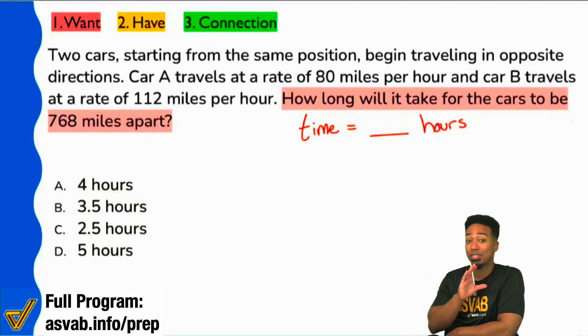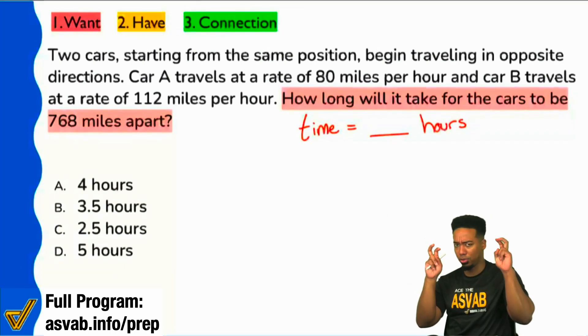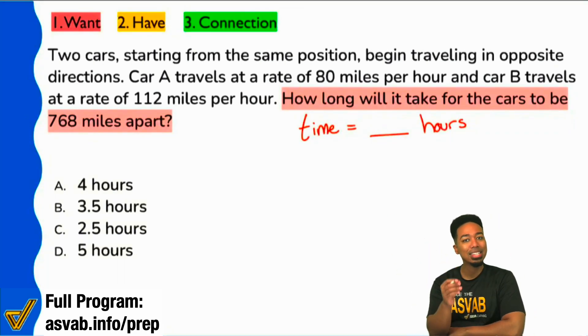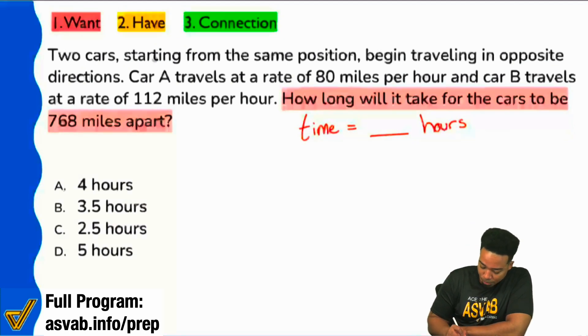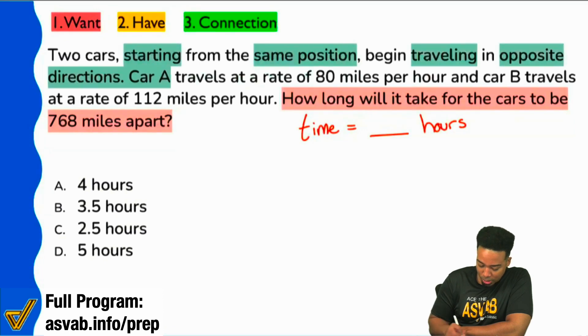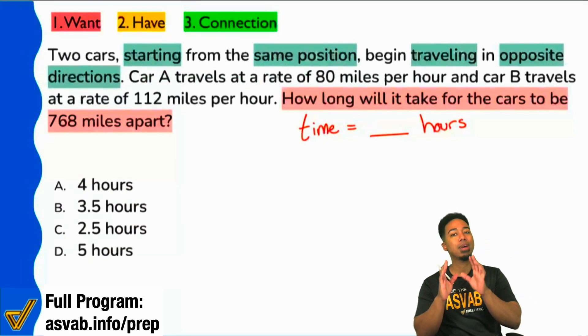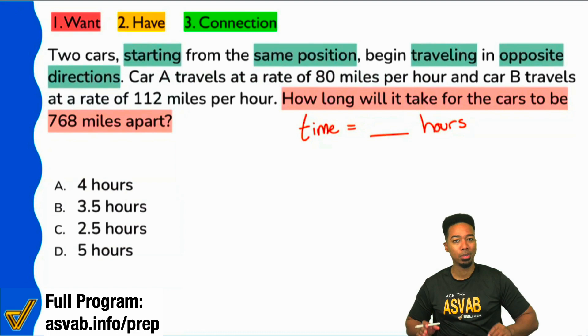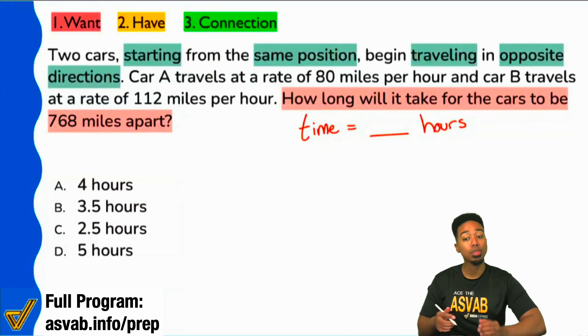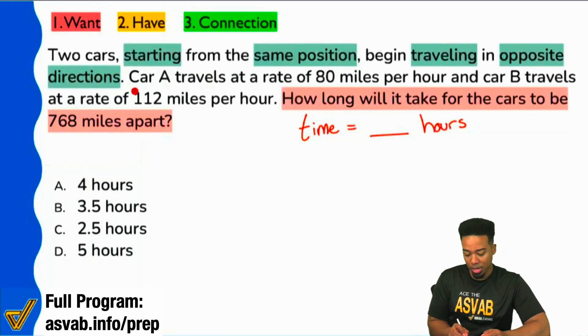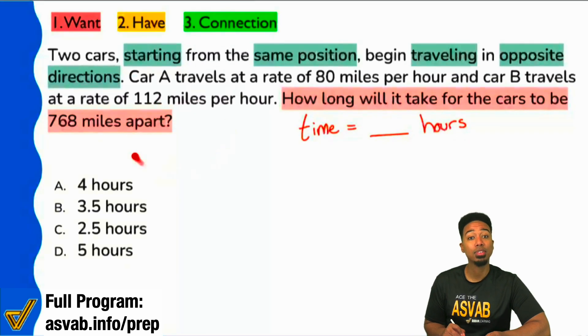I'm going to highlight this for now and I'm going to come back to it. Notice that this sentence doesn't have any numbers with the exception of two cars, but again, this is very important. They start from the same position and travel in opposite directions. We will come back to that piece of information in a moment. So the first number that we truly see will be that car A travels at a rate of 80 miles per hour.